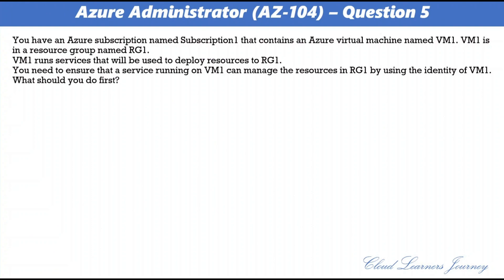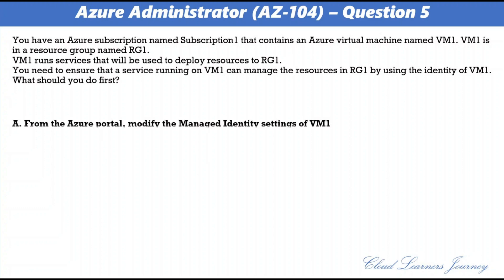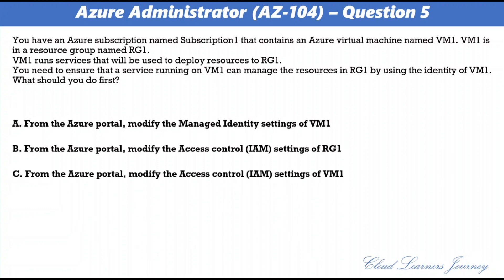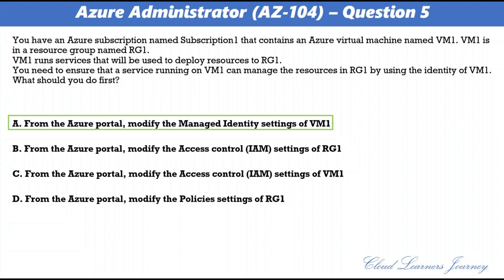Question 5. You have an Azure subscription named Subscription1 that contains an Azure virtual machine named VM1. VM1 is in a resource group named Archie1. VM1 runs services that will be used to deploy resources to Archie1. You need to ensure that a service running on VM1 can manage the resources in Archie1 using the identity of VM1. The correct option is A: from the Azure portal, modify the managed identity settings of VM1. Managed identities for Azure resources provide an automatically managed identity in Azure Active Directory. You can enable and disable the system-assigned managed identity for a VM.